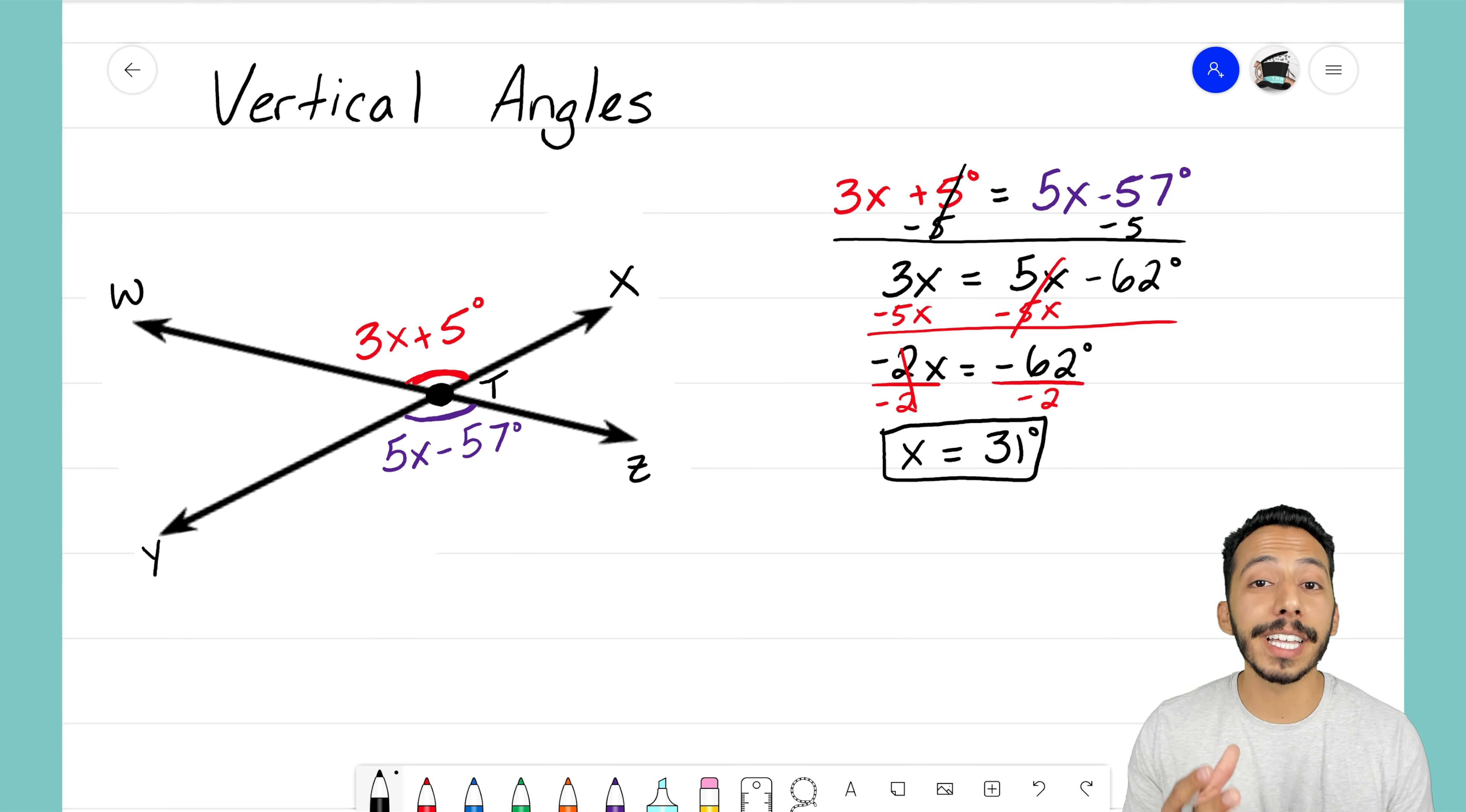Remember, vertical angles are angles that are opposite of each other when two lines intersect, and they are equal every single time. It's That Math Magician, and I'll see you on the next video.